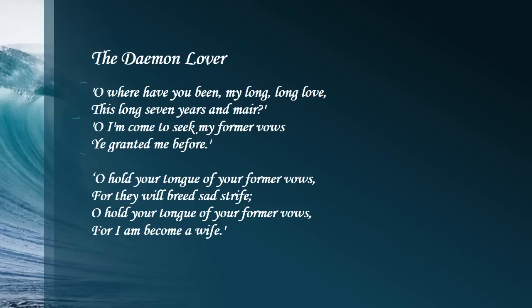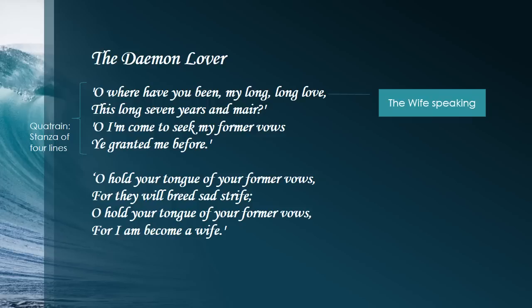Now, what do you see here? One, two, three, four lines — four lines are a quatrain, a stanza of four lines. The next stanza begins with more dialogue: 'Oh, hold your tongue of your former vows, for they will breed sad strife. Oh, hold your tongue of your former vows, for I am become a wife.' So we can start detecting who the different speakers are. The first speaker is the wife, and the second person, from the title, must be the demon lover speaking.